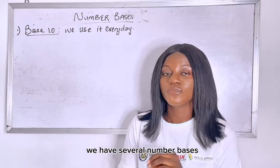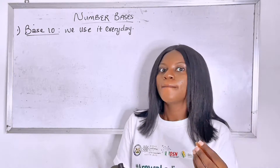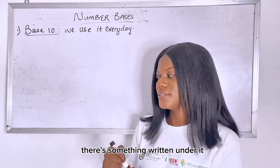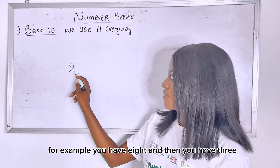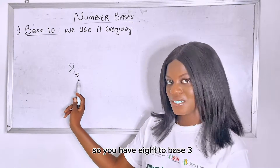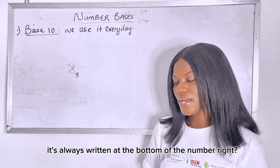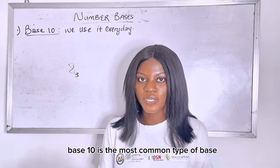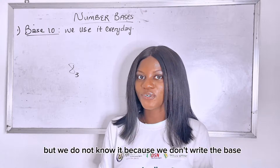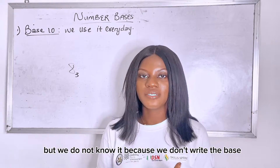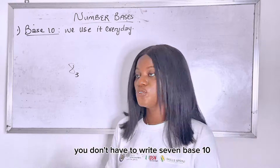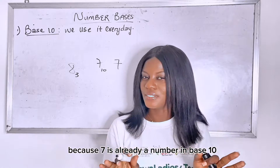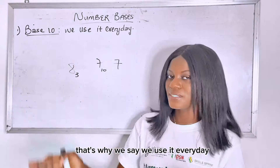Okay, so now let's begin. We have several number bases. When we say number bases, we mean numbers which have a base — there's a subscript, something written under the number. For example, you have eight and then you have three, so you have eight to base three. It's always written at the bottom of the number. So we're beginning with base 10. Base 10 is the most common type of base. We use it every day, but we do not know it because we don't write the base. In most cases, you don't have to write base 10 — you don't have to write seven base 10 because seven is already a number in base 10. Does that make sense? That's why we say we use it every day.